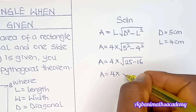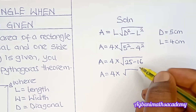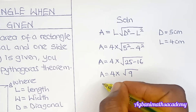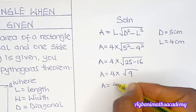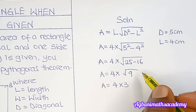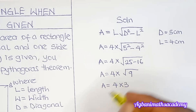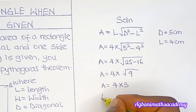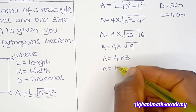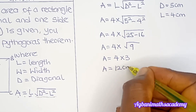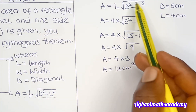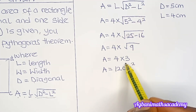Continuing: 25 minus 16 is 9, so we have A = 4 × √9. The square root of 9 is 3, so A = 4 × 3 = 12. The area of this rectangle is 12 centimeters squared.